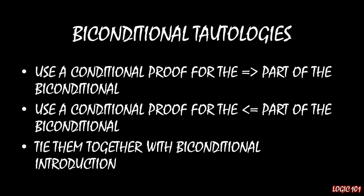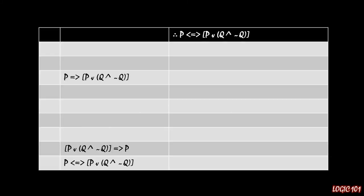Then you're going to tie those two things together with biconditional introduction, and at that point, you're done. So to illustrate, first we're going to show that p implies p or q and not q. That's essentially erasing the biconditional and replacing it with a conditional statement. Then after we've done that, we're going to flip-flop the ordering.